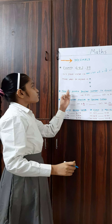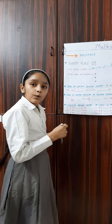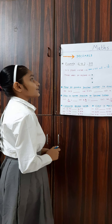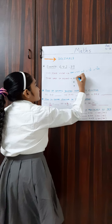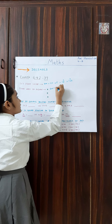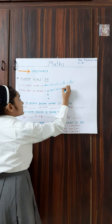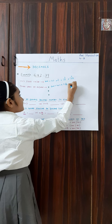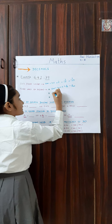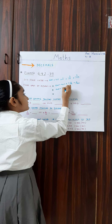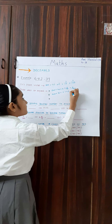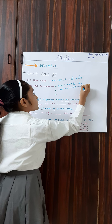Now I will tell you three ways of writing the expanded form of this number. The first is: 600 plus 40 plus 2 plus 3 upon 10 plus 9 upon 100. The second is: 600 plus 40 plus 2 plus 0.3 plus 0.09.